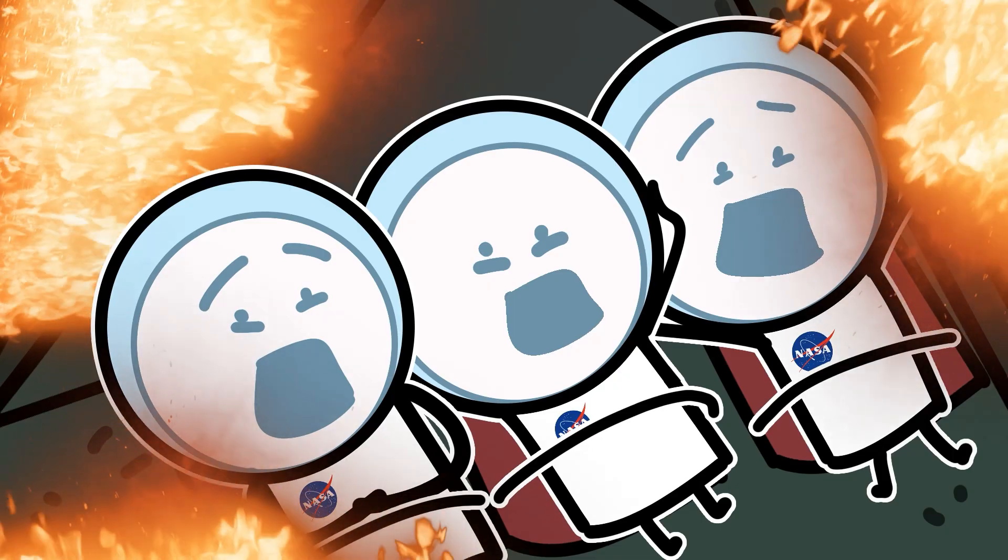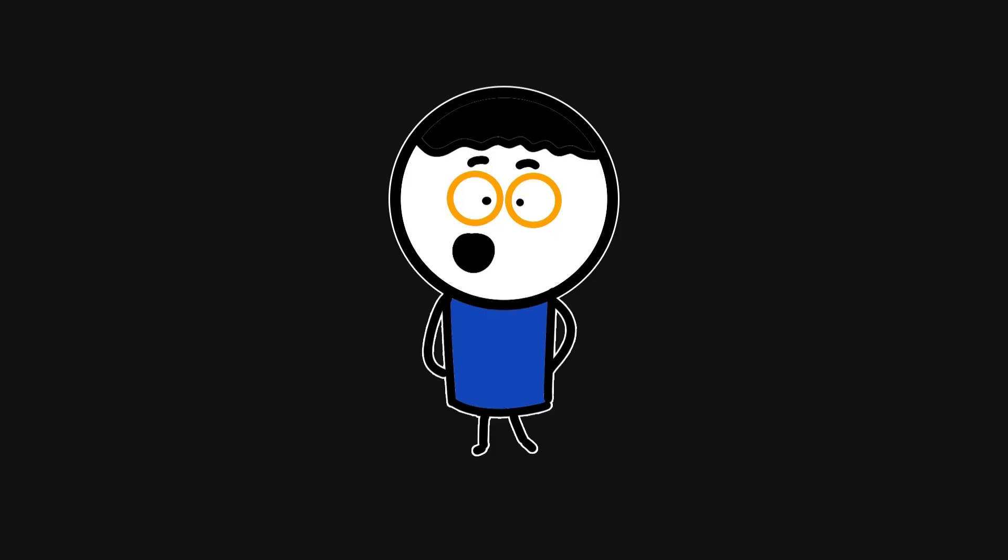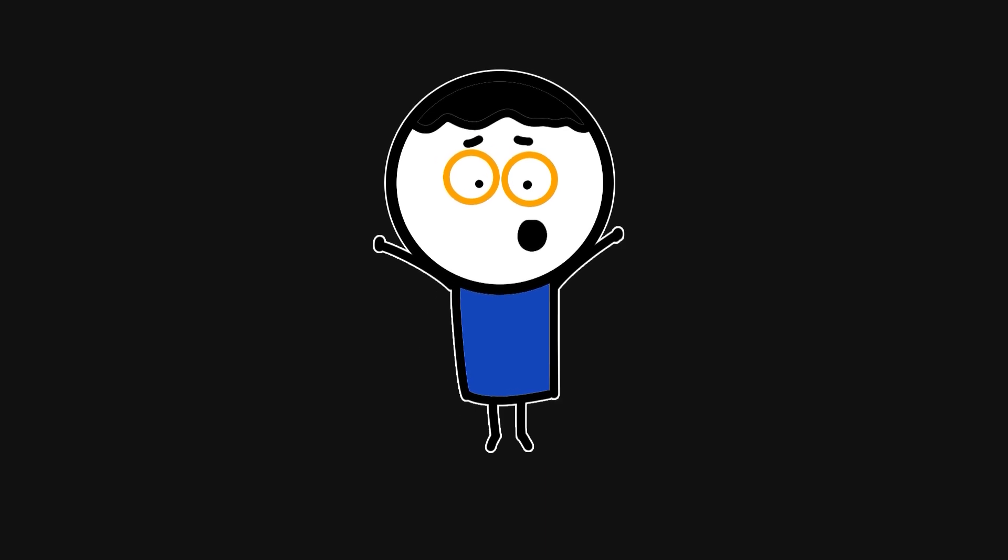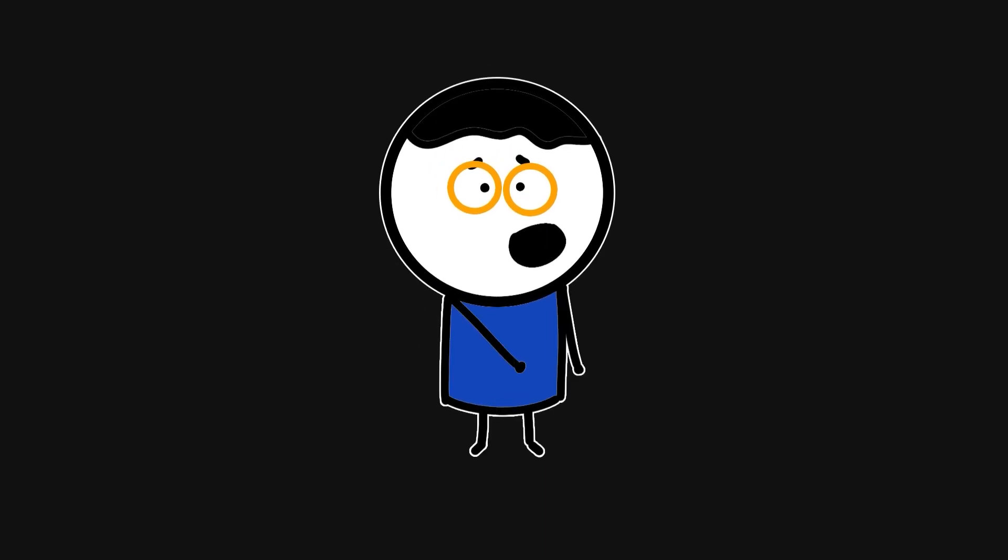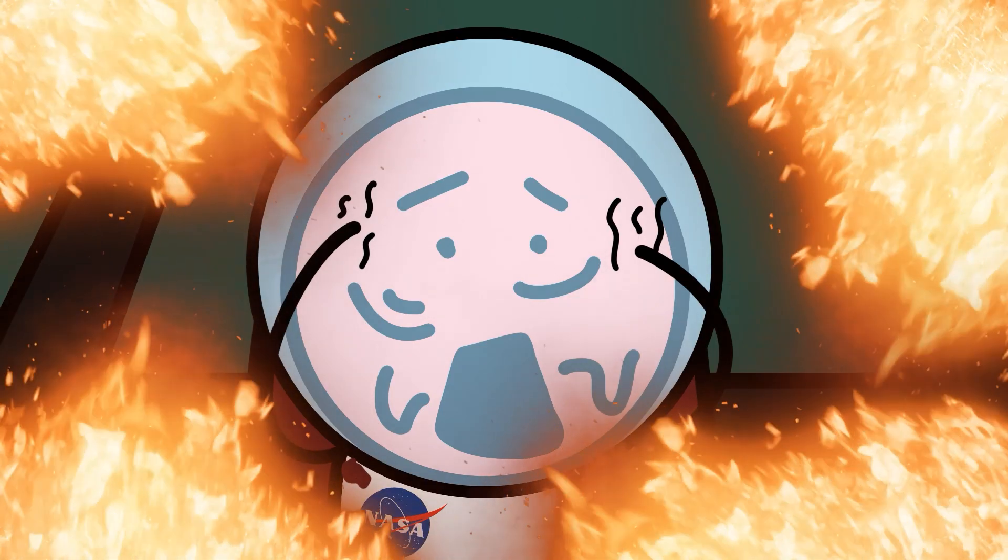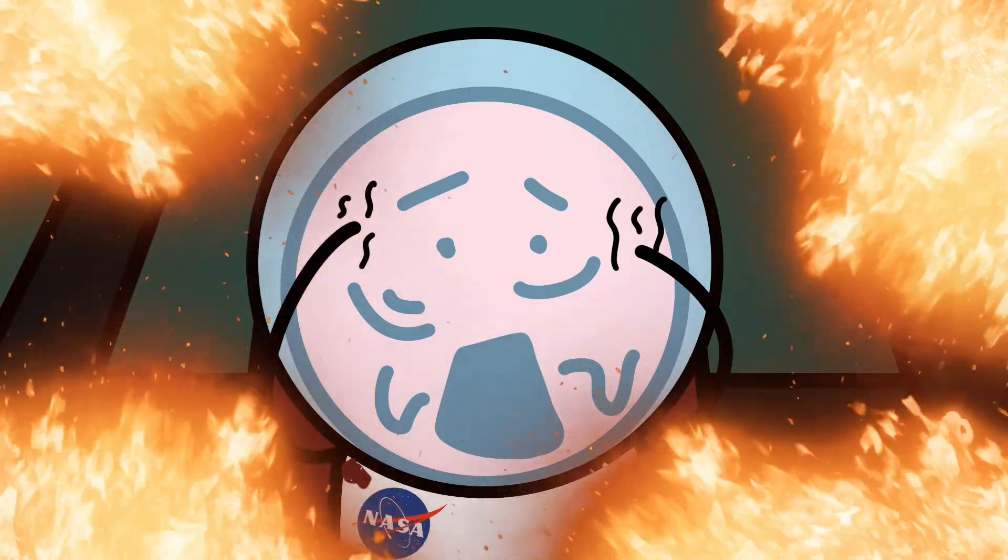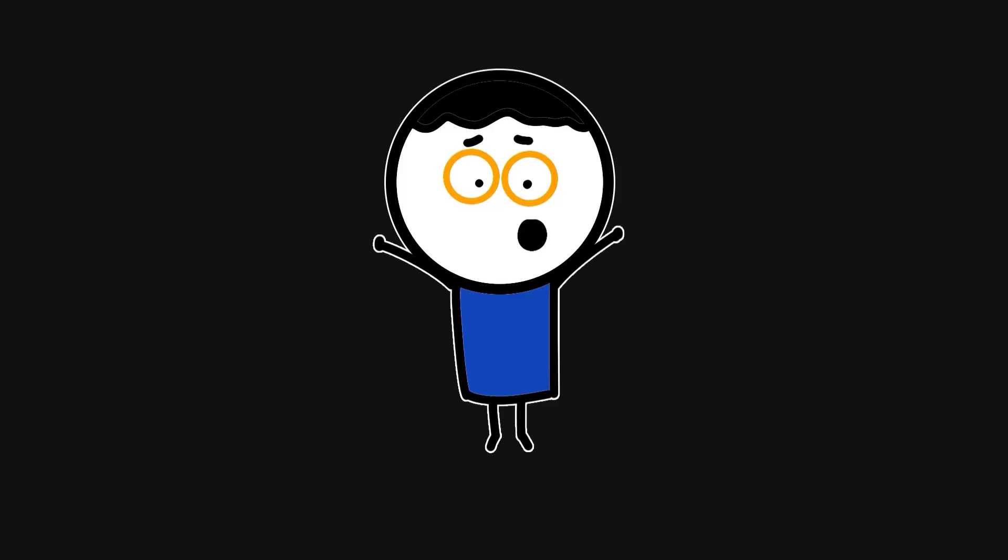The flames explode through the cabin, feeding on Velcro, nylon netting, highly flammable materials meant to keep things in place, now turning the spacecraft into a death trap. The heat is unbearable, soaring past 1000 degrees Fahrenheit.